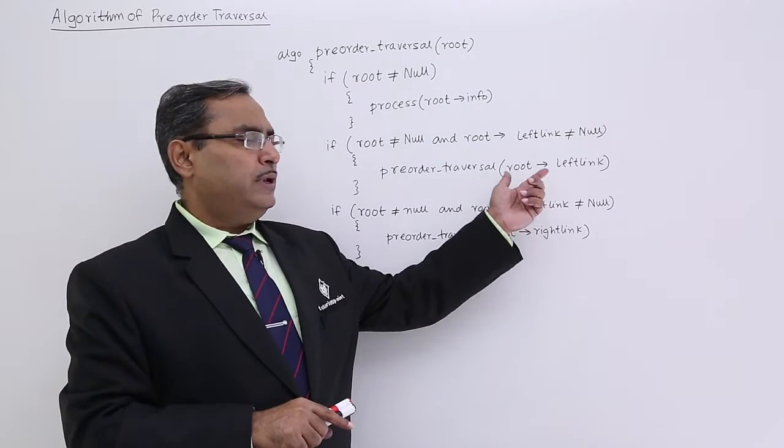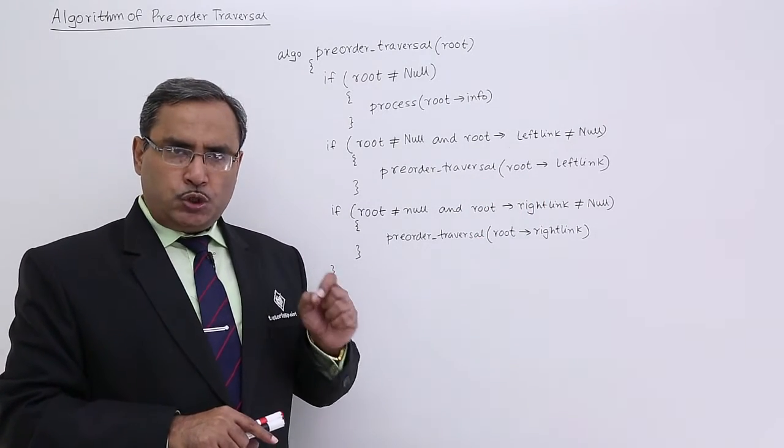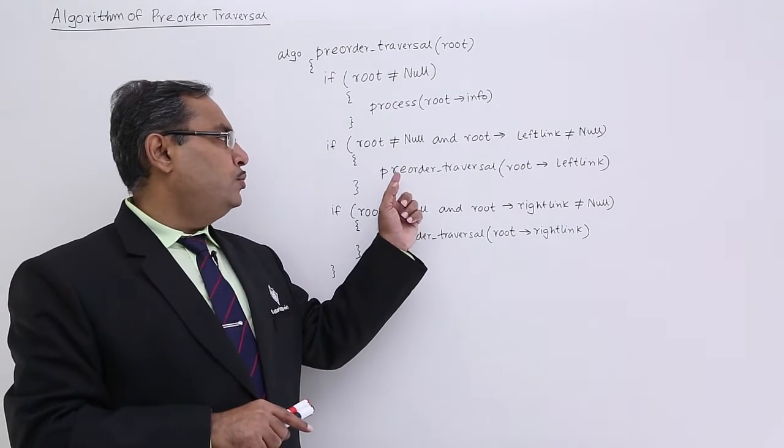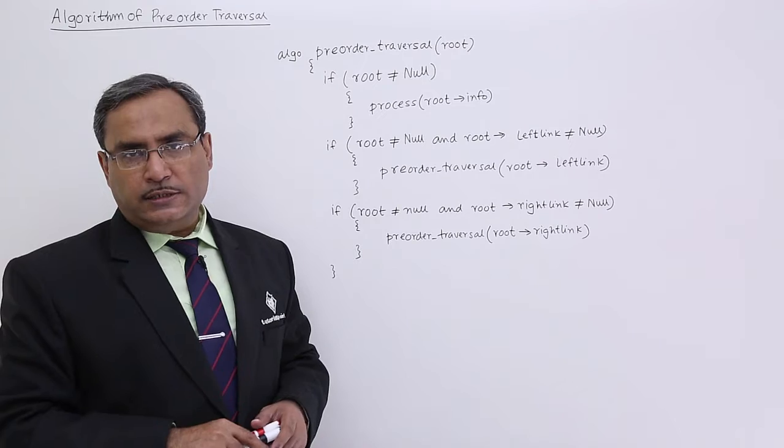That means I am passing this root implies left link—that means the root node of the left subtree will be passed as input parameter to pre-order traversal in a recursive way.